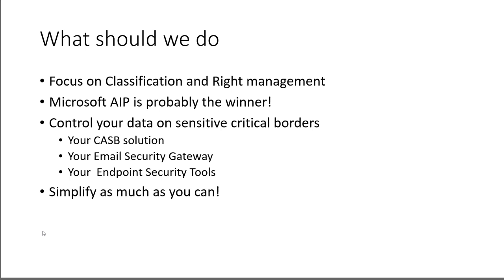What should we really do instead? I believe we need to focus on classification and rights management rather than traditional DLP. Microsoft AIP — Azure Information Protection — is probably one of the biggest solutions and could be the winner here, because there is a lot of built-in integration with Microsoft products. It provides the level of classification and protection that most companies need, so if you are a Microsoft customer, it is definitely recommended to look at Microsoft AIP.